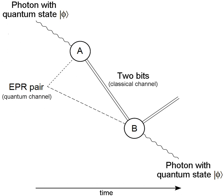Networked quantum computing or distributed quantum computing works by linking multiple quantum processors through a quantum network by sending qubits between them. Doing this creates a quantum computing cluster and therefore creates more computing potential. Less powerful computers can be linked in this way to create one more powerful processor. This is analogous to connecting several classical computers to form a computer cluster, and like classical computing, this system is scalable by adding more quantum computers to the network. Currently, quantum processors are only separated by short distances.